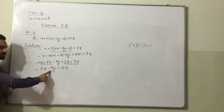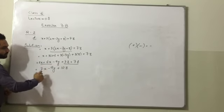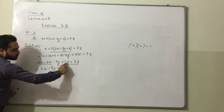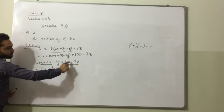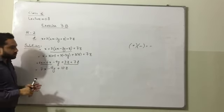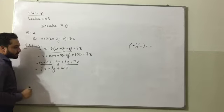Minus 9y will remain same because there is no other value of y. And this is 3z plus 7z. And when we add these terms, this will become 3 plus 7z is equal to 10. So this will become 10z.